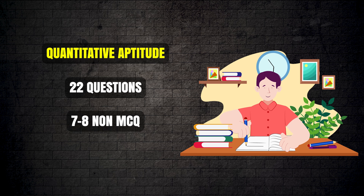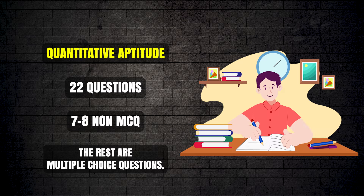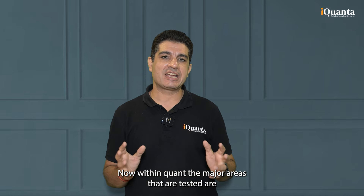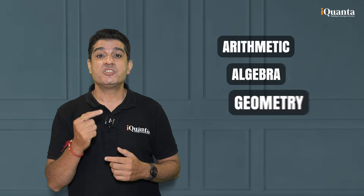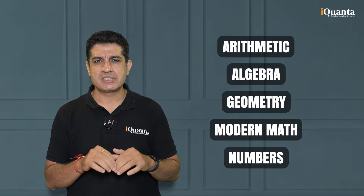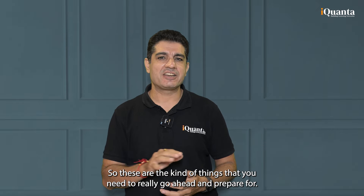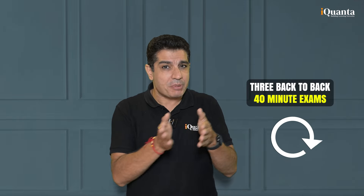Finally, we have Quantitative Aptitude, which has 22 questions. Seven to eight of these are non-MCQs and the rest are multiple choice questions. Within quant, the major areas that are tested are arithmetic, algebra, geometry, modern math, and numbers. These are the things you need to prepare for.